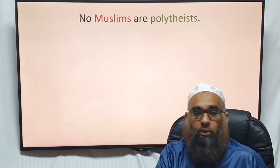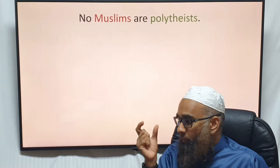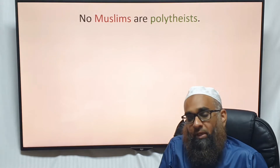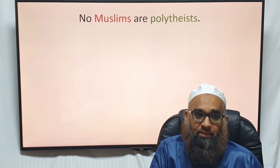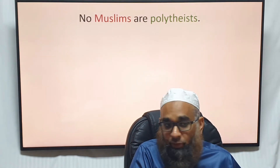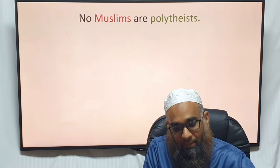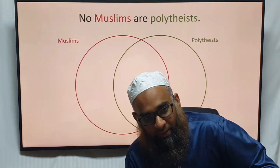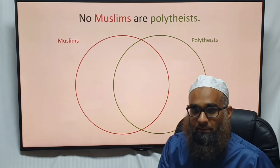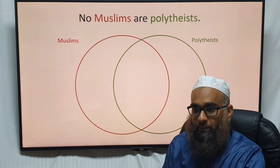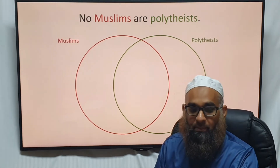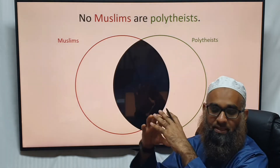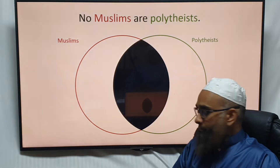Non-Muslims are polytheists. Monotheist means believing in one God; polytheist means believing in multiple gods. This is an E proposition — universal and negative. We have Muslims and polytheists. What are we going to shade out? The middle, because Muslims can't overlap with polytheism in any form. That's how we draw it.